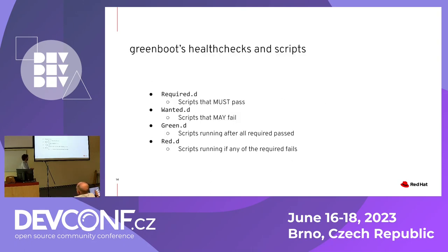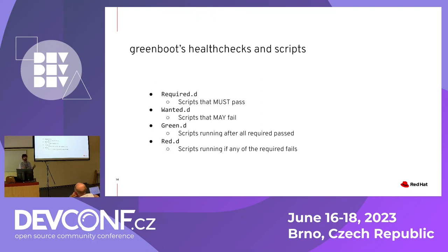The basic directory structure for Greenboot: scripts under /etc/greenboot/check/required.d must pass — if any script fails during boot into a new deployment, the boot is marked as not good and Greenboot either retries or rolls back to the previous deployment via RPM-OSTree. The wanted.d directory holds scripts that may fail — failures that are acceptable in a new deployment. And green.d and red.d are boot-status script directories: if it's green, run these; if it's red, run the others.